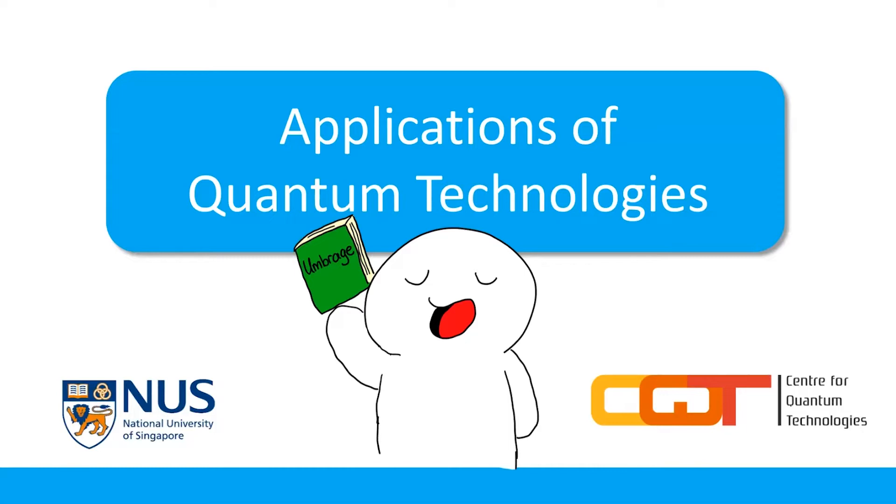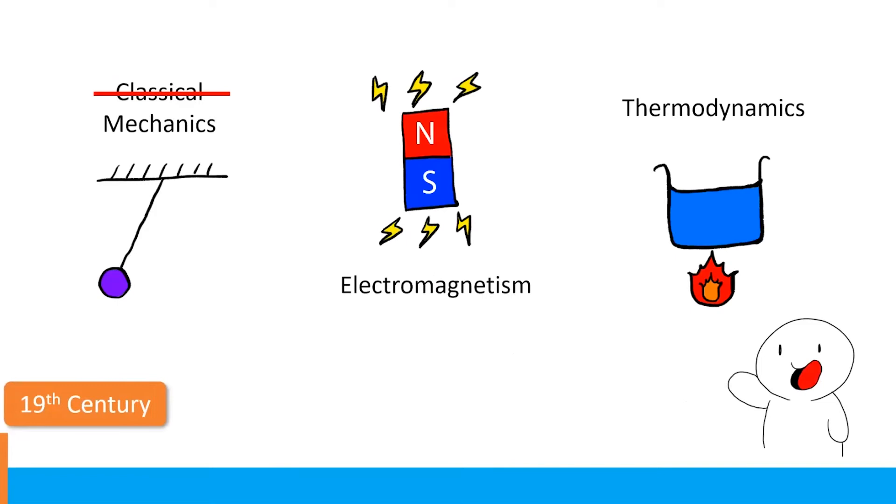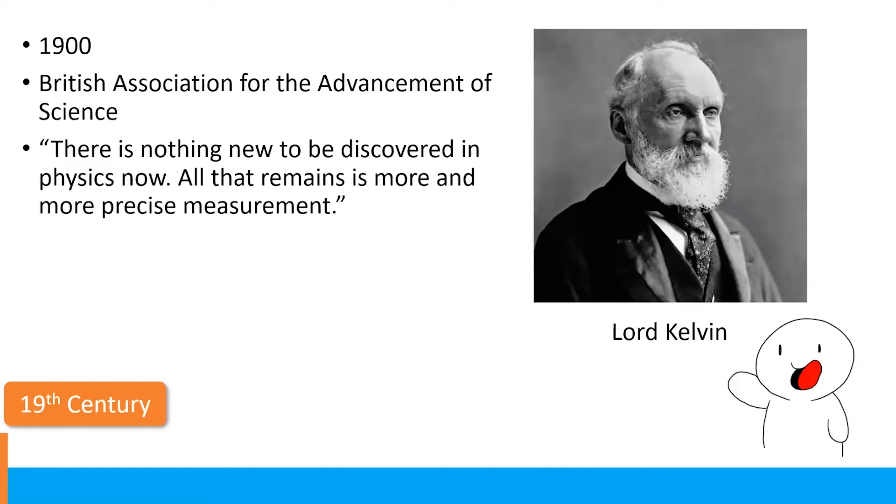To do that, we must go back to the beginning at the end of the 19th century. By the end of 19th century, physicists already know three major subfields of physics: classical mechanics, then only called mechanics because we don't know it's going to be classical beforehand; electromagnetism and thermodynamics. At that point in time, these are the only things that are needed to describe almost everything we know in physics. Hence, physicists at the time had a huge confidence that all the laws of physics are known.